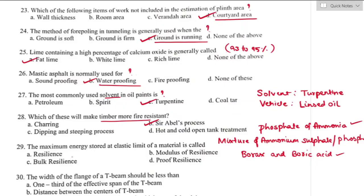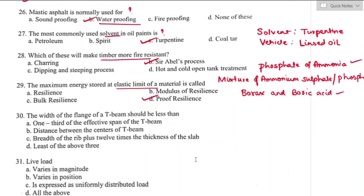Question number twenty-nine: the maximum energy stored at the elastic limit of a material is proof resilience. Option D is the right answer. Question number thirty: the width of the flange of a T-beam should be the least of the following three values — one-third of the effective span, the distance between the centers of T-beams, and breadth of the rib plus 12 times the thickness of the slab. Option D is the right answer.